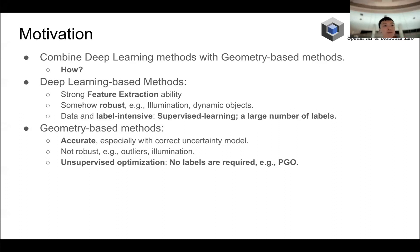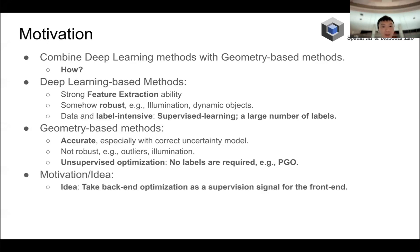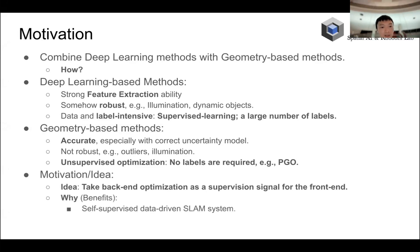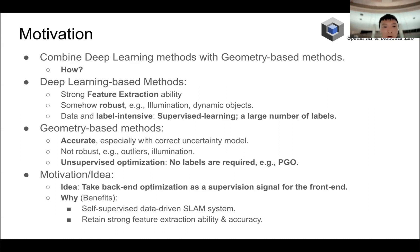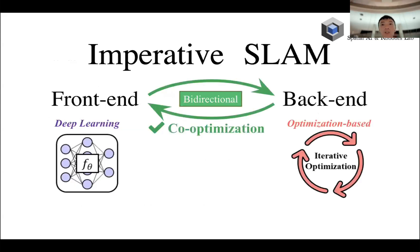So on one hand, deep learning is a supervised method; it is also optimization but very label intensive. But the geometry-based method is unsupervised. So our idea is: can we take back-end optimization as a supervision signal for the front end? In this case the front end is a neural network, but the back end is unsupervised. That means we will have a self-supervised data-driven system that retains the strong feature extraction ability from deep learning networks as well as the accuracy from the back end.